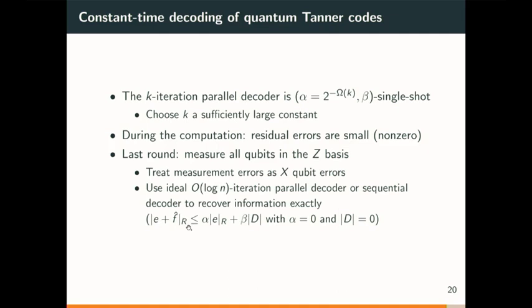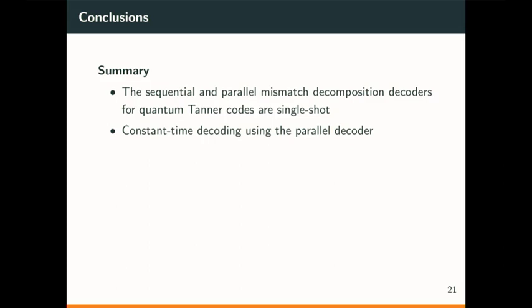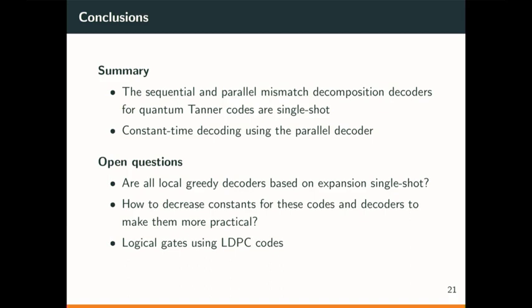In summary, we show that the sequential and parallel mismatch decomposition decoders are single-shot for quantum Tanner codes, and we can achieve constant-time decoding using the parallel decoder. Open questions include: are all decoders for good quantum LDPC codes single-shot? I suspect so, since all constructions are similar and based on expansion, and all decoders are local greedy type. I believe it's probably single-shot as well.